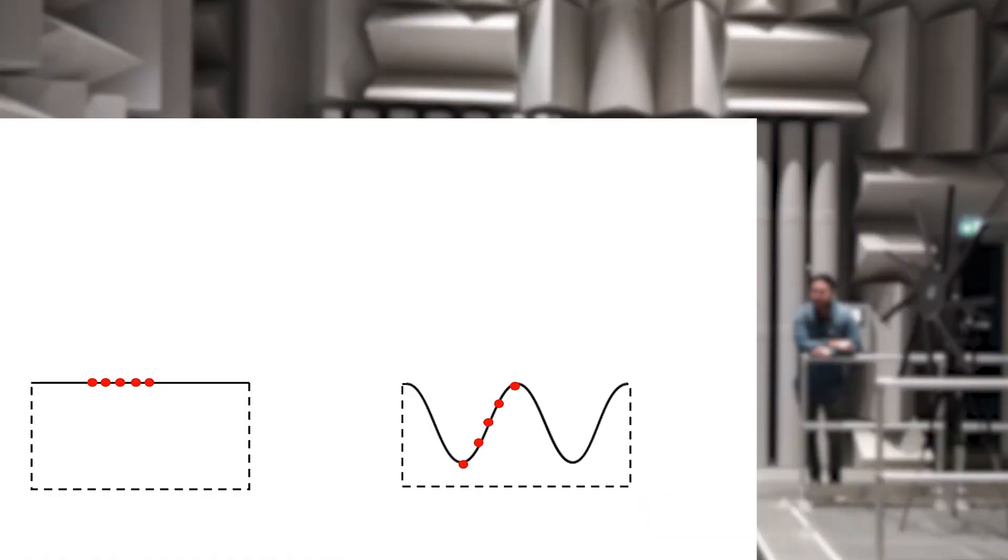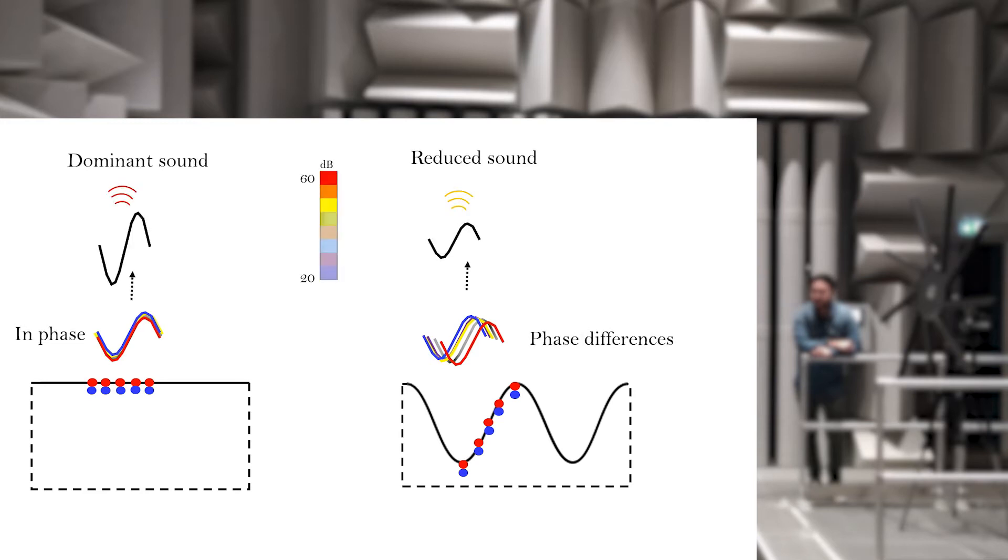Now comparing the straight and the wavy leading edge, some pressure fluctuations are generated along the airfoil span in phase and with phase differences. This leads to dominant or reduced sound in the far field.